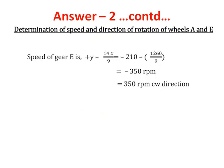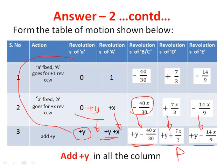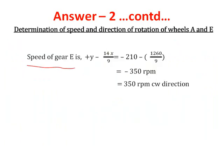The second part is finding the speed of gear E. From the table of motion, the speed of gear E is +Y − 14X/9. Substituting Y = −210 and X = 90: −210 − 14(90)/9 = −210 − 140 = −350 RPM. This means gear E rotates at 350 RPM in the clockwise direction.